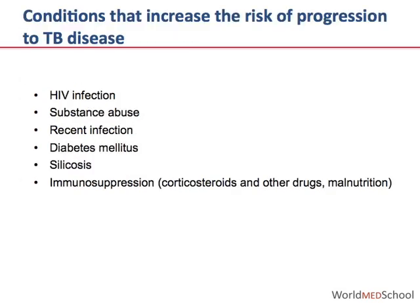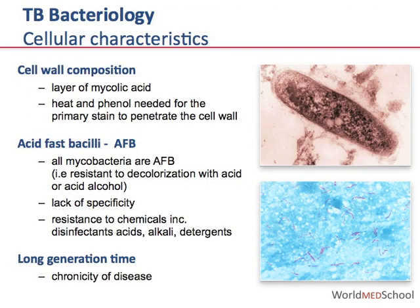Conditions that increase the risk of progression from tuberculosis infection to active disease not only include HIV infection, but also substance abuse, recent infection, diabetes, silicosis, and immunosuppression associated with corticosteroids and other drugs. This slide shows some of the key characteristics of the cell of the TB bacilli.